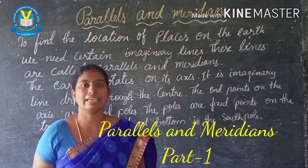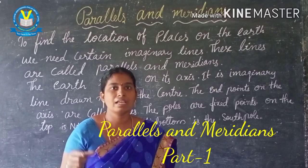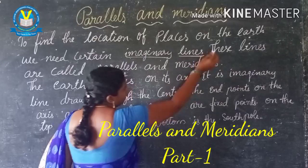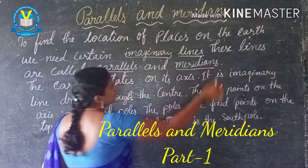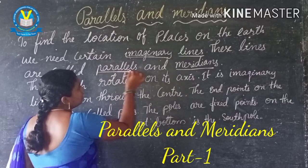Parallels and Meridians. To find the location of places on the earth, we need certain imaginary lines. These lines are called parallels and meridians.